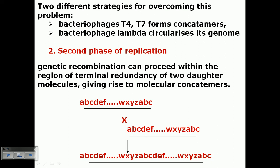The second phase of replication involves genetic recombination that proceeds within the regions of terminal redundancy of two daughter molecules. This second phase is unique to T4, because phages like lambda do not have terminal redundancy — they rely on cohesive sites produced during packaging. In T4, as shown here, the sequence is a, b, c, d, e, f ... then w, x, y, z, and after z, again a, b, c, d — a continuous repeat of the same sequences at both ends.